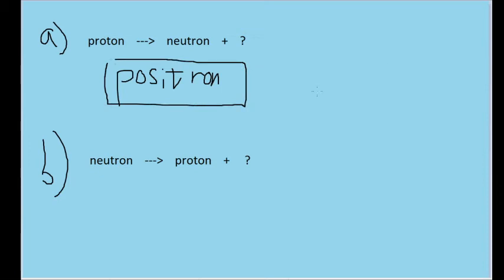Part B asks basically the same question, except we're transforming a neutron into a proton. Once again, is an electron or a positron being produced here?